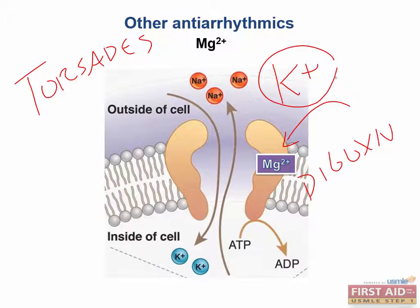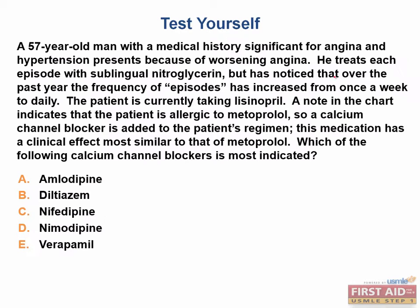Test question: A 57-year-old man with a history of angina and hypertension presents with worsening angina. He treats each episode with sublingual nitroglycerin but has noticed that over the past year, frequency has increased from once a week to daily. He is currently taking lisinopril. A note in the chart indicates he is allergic to metoprolol, so a calcium channel blocker is added to his regimen. This medication should have a clinical effect most similar to that of metoprolol. Which calcium channel blocker is most indicated?